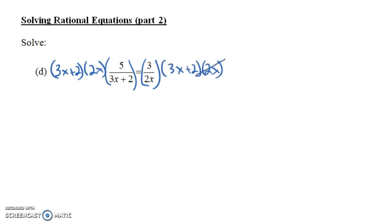Notice on the right-hand side, the 2x's get knocked out, they divide out, and what we're left with is 3 times 3x plus 2, which is 9x plus 6 if you distribute that 3.